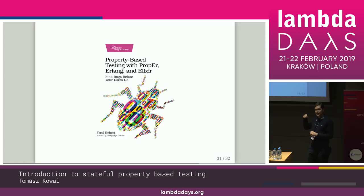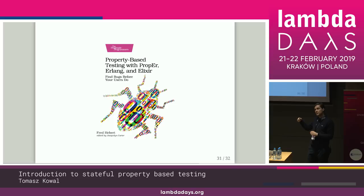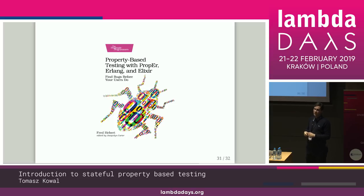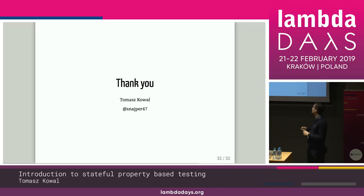I made my presentation mostly using this book: 'Property-Based Testing with PropEr, Erlang, and Elixir' by Fred Hebert. It's absolutely awesome and I'm not paid to say that. It shows all of the intermediate things you need to learn — it's not only showing you how to use the framework, it really teaches you how to do property-based testing. During John's talk yesterday, he also showed some examples that are covered in that book, so it's really great and I encourage you to read it.